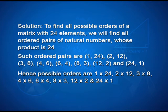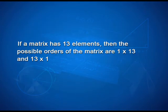Hence, all possible orders are 1 by 24, 2 by 12, 3 by 8, 4 by 6, 6 by 4, 8 by 3, 12 by 2 and 24 by 1. If a matrix has 13 elements then the possible orders of the matrices are 1 by 13 and 13 by 1.